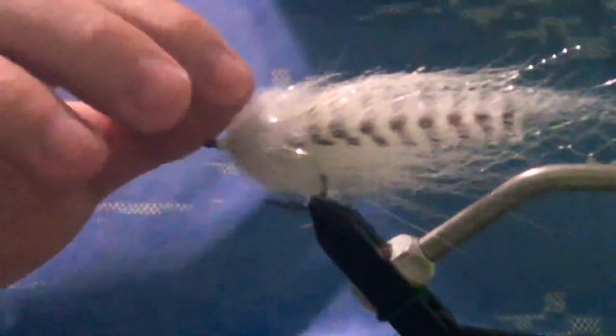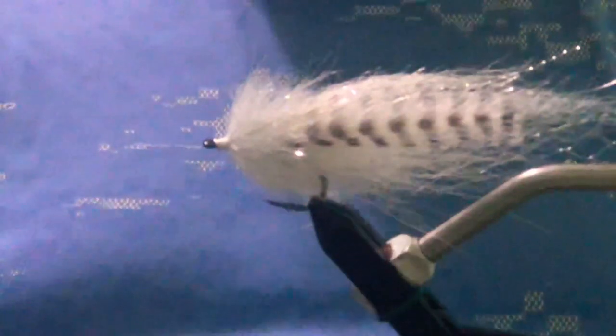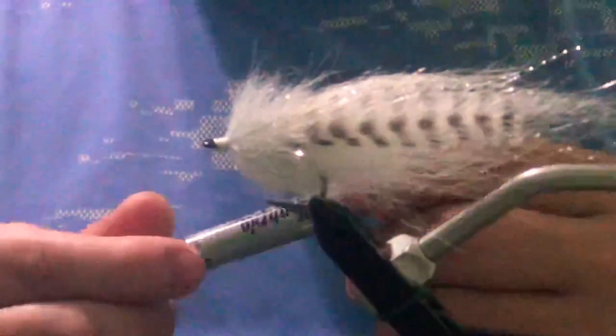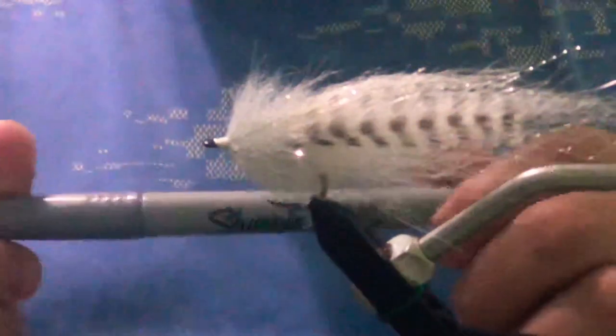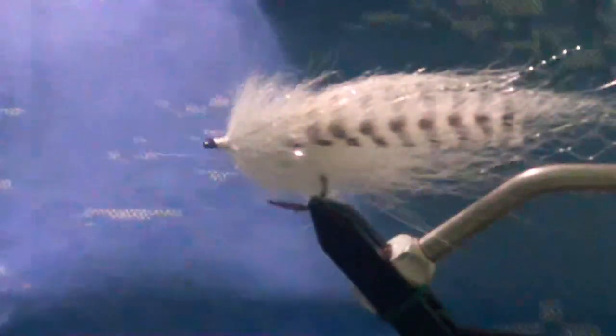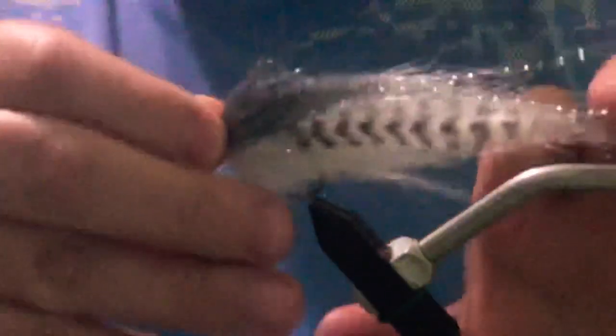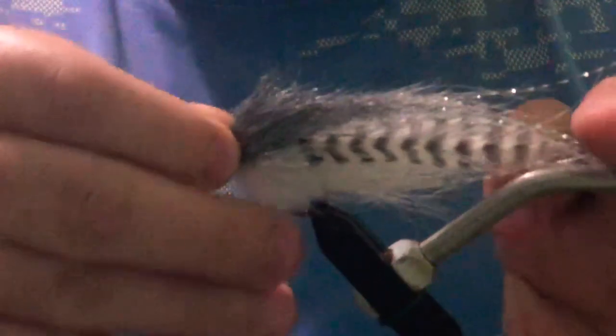So the next thing we're going to do is we're going to color the top part of this fly with a Sharpie. We're going to use this silver Sharpie today. I'm not going to show you guys the coloring part, most of you learned how to color in kindergarten. So we're just going to show you the finished product of what it looks like when it's colored. And you see all I did was just kind of hit the sides and just kind of angle it back a little bit. Didn't go all the way to the back, just mostly covered up the minnow head on the top and just a little bit of the Senyo brush.